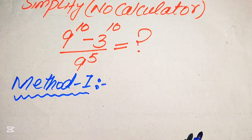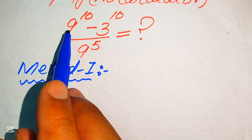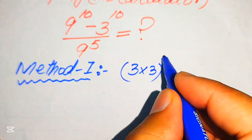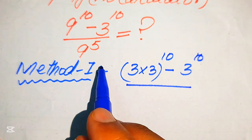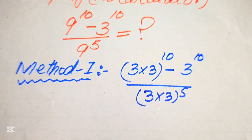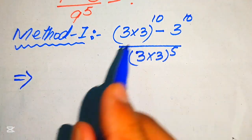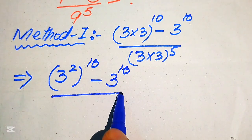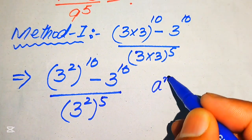We solve this with two methods. In the first method, we focus on the base of the term. Our base is 9, and we write it as 3 multiplied by 3 with whole exponent 10, minus 3 to the power of 10, divided by 9 to the power of 5. We write 9 as 3 multiplied by 3 with whole power 5. In the next step, 3 multiplied by 3 equals 3 squared, with whole power 10.